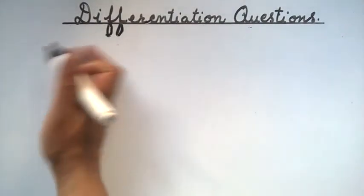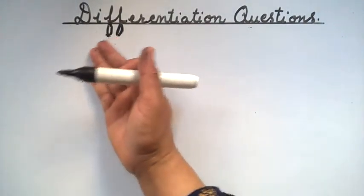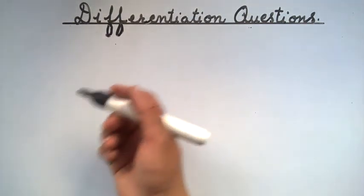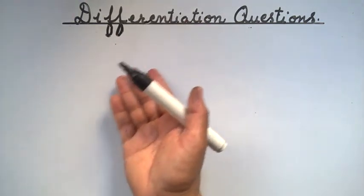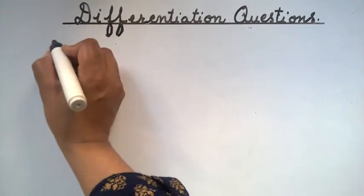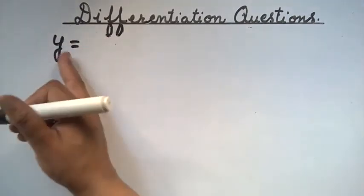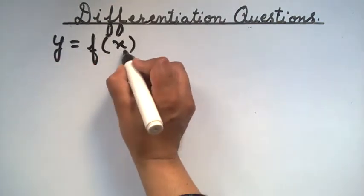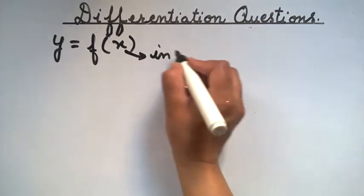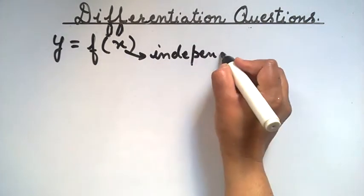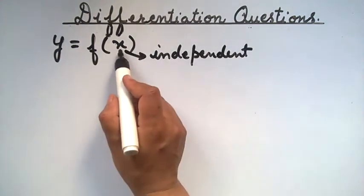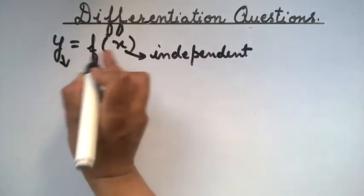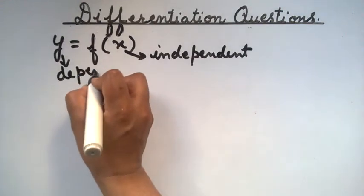Let's solve some differentiation questions. Differentiation is a part of mathematics, and in physics we make use of some basic calculus — that is integration and differentiation. Differentiation is a splitting of variables, and variables are values which change with time. If y is a function of x, and x is an independent variable, then when the value of x changes, y also changes, so y is a dependent variable.